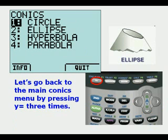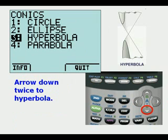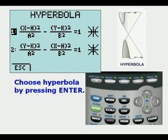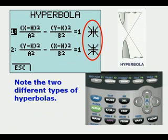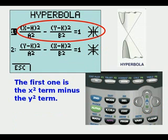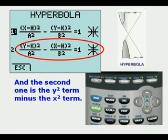Let's go back to the main menu by pressing Y equals 3 times again and arrow down twice to get to hyperbola. We can choose hyperbola just by pressing Enter and note we have two different types of hyperbolas where we have two separate curves oriented differently.